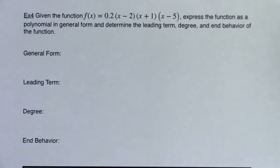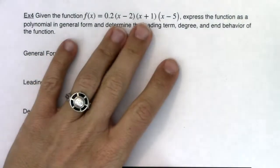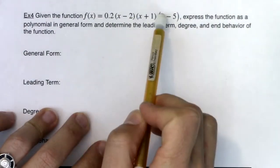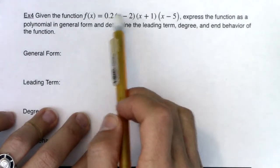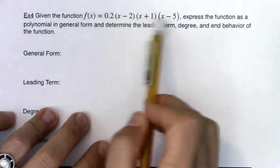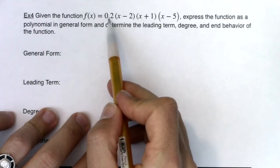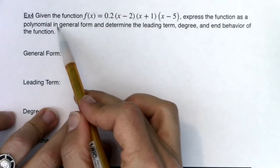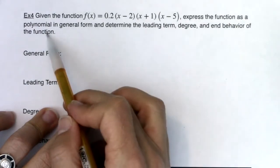Hey MAT31, we're back and we're going to find the same information we did in Example 3. We want a lead term, a degree, and an end behavior. But I gave you the function in a slightly different form.